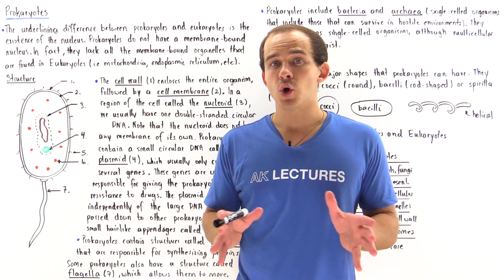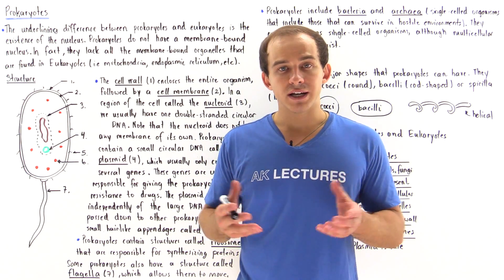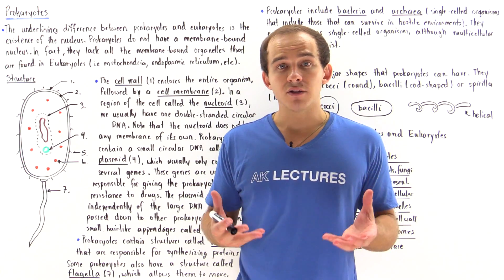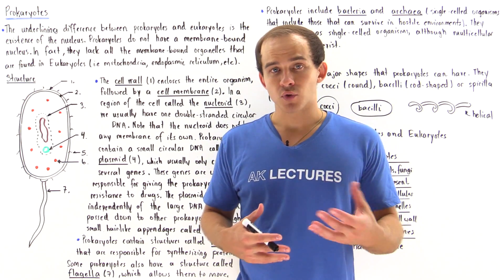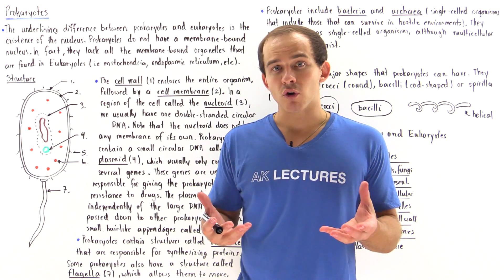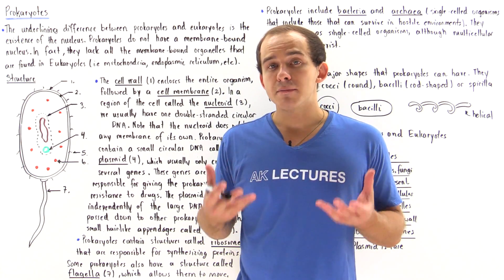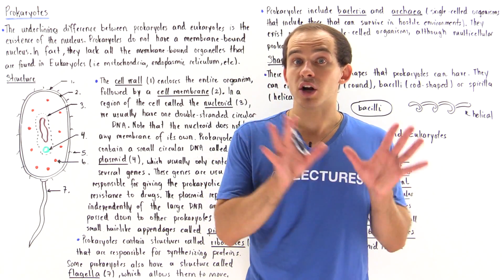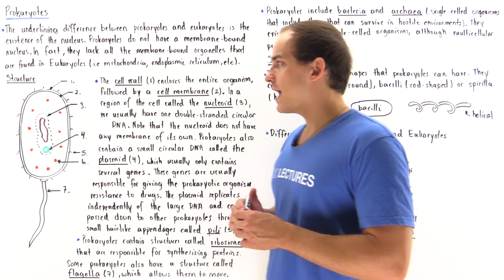All prokaryotes lack any membrane-bound organelle, and this includes organelles such as the mitochondria, the Golgi apparatus, the endoplasmic reticulum, and so forth. All these membrane-bound organelles that are found in eukaryotes are not found in prokaryotes.